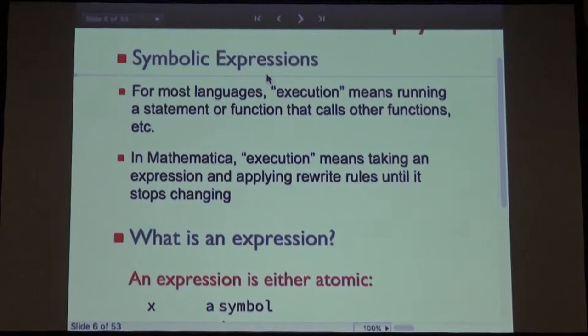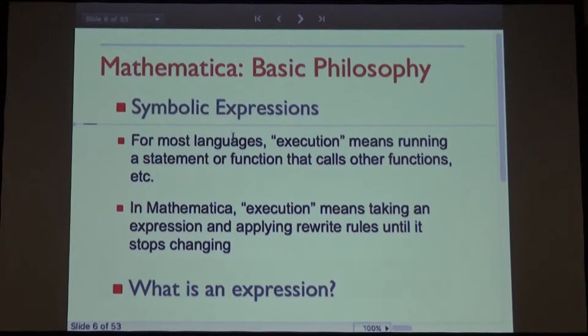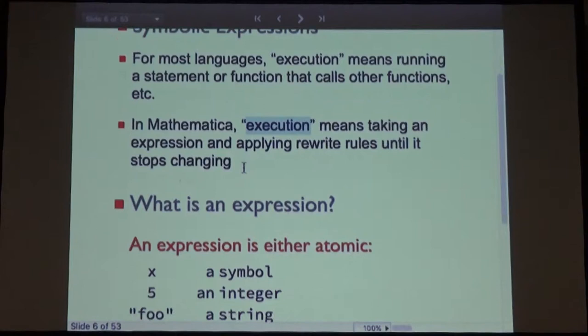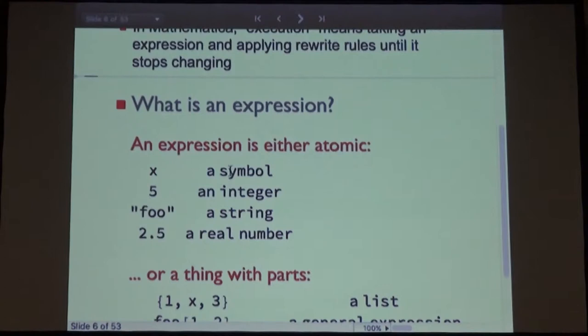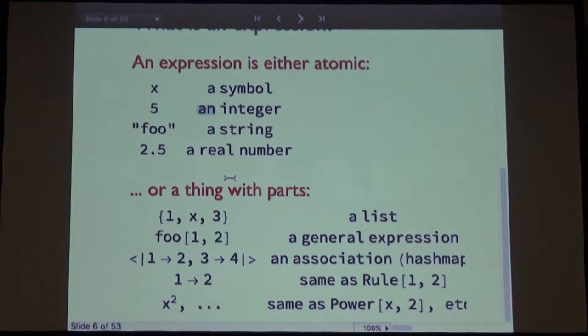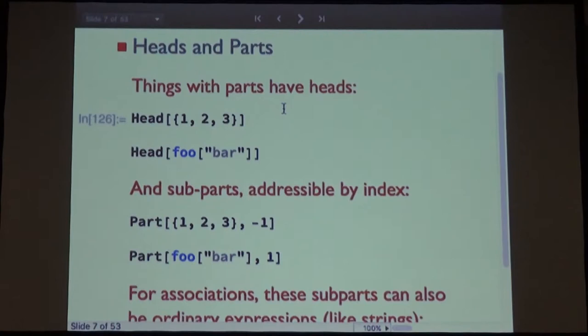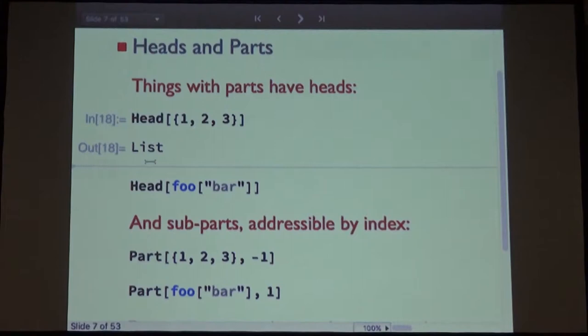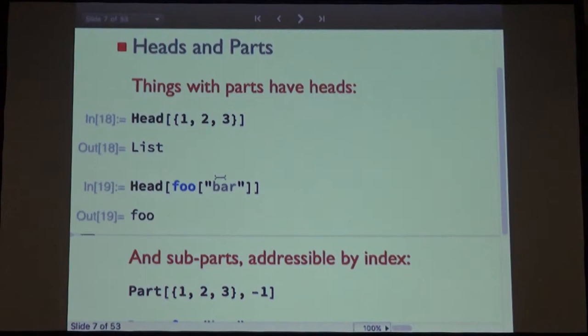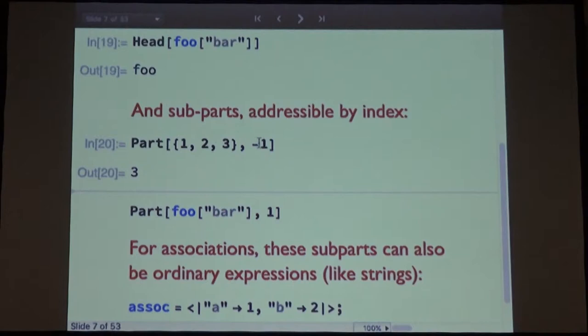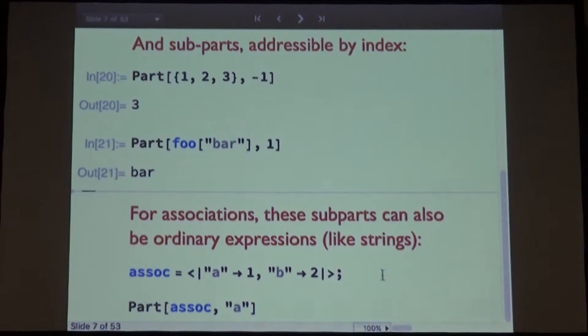For those interested in language design: in most languages, execution means running a statement or function. In Mathematica, execution means taking an expression and applying rewrite rules until it stops changing. Everything is an expression — either atomic pieces like integers, strings, or real numbers, or compound expressions like associations, which are basically Python dictionaries. Compound expressions have a head, and you can ask what that is, or make your own compound expression. You can also ask for any part of a compound expression.